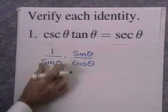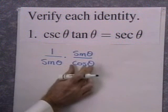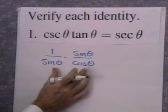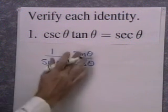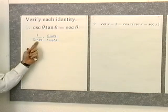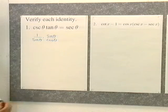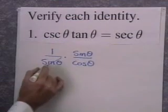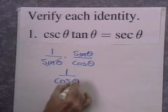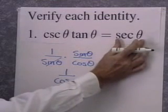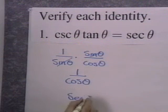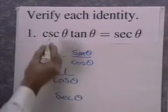I've used one reciprocal identity and one ratio identity to change cosecant theta times tangent theta into an expression involving only sine theta and cosine theta. Now I want to divide out the sine thetas in the numerator, and what's left is 1 over cosine theta. I keep an eye on the side I'm working towards — this is secant theta, and 1 over cosine theta is the same as secant theta. So there I've verified this identity.